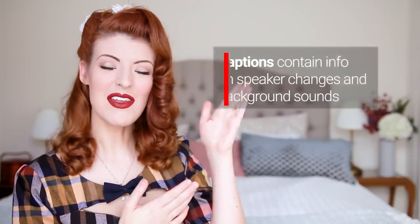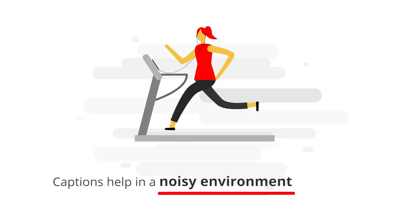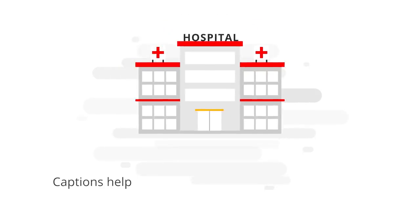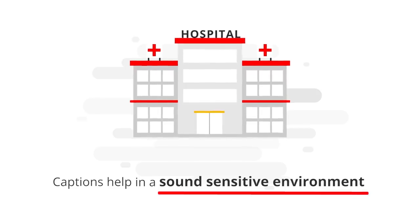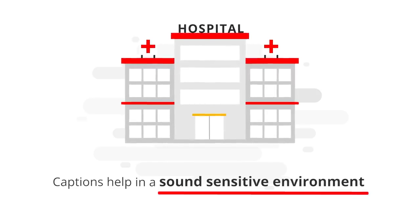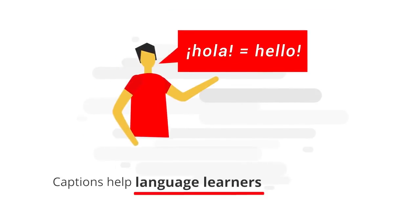Captions contain information about speaker changes and also background sounds that can enhance the story. While captions ensure accessibility for people who have hearing loss, they're also useful in a wide range of other situations — say you're hearing but you're in a really noisy environment like a gym, or you're in a sound-sensitive environment like a hospital. The captions will ensure that you can still have the fullest experience, and of course if your viewer has English as a second language.